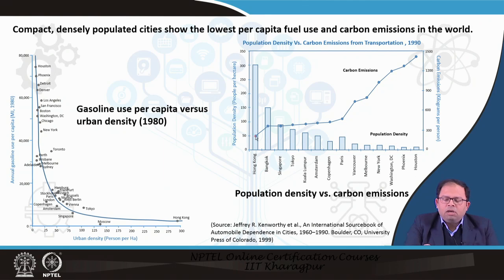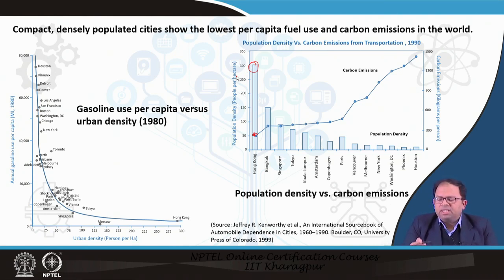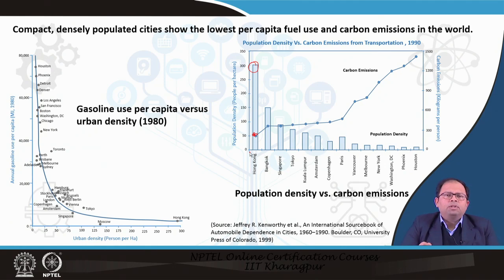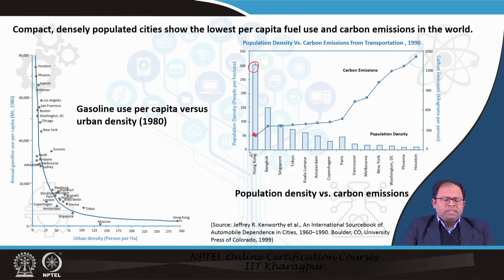Hong Kong's emission level is comparatively low even though its population density is very high. We can argue that Bangkok is not as developed, but cities like Tokyo and Hong Kong are very well-developed, and because of their form — being more densely packed — the amount of fuel use and emissions are both less. Compact urban forms and transit-oriented developments — these kinds of city planning initiatives were gradually being taken up.